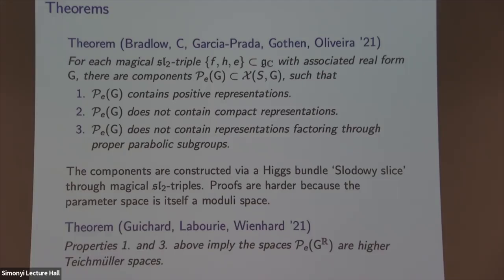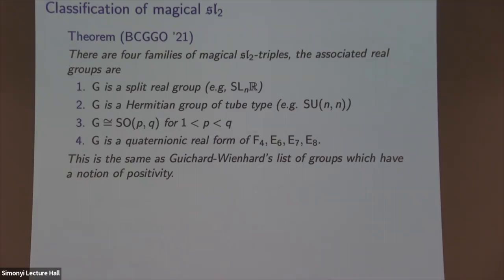The theorem by Guichard, Labourie, and Wienhard uses properties (1) and (3) and more information about positivity to imply that all representations in these spaces are discrete and faithful. There is also a classification result: there are four families of magical SL₂ triples. The first is the split real case — Hitchin's construction. The second is when the group is a Hermitian Lie group of so-called tube type, like SU(N,N). Then there are SO(p,q) for 1 ≤ p < q, and four exceptional Lie groups: the quaternionic real forms of F₄, E₆, E₇, E₈. This is the same list as the positivity classification.